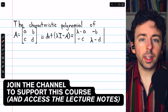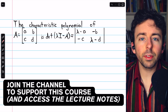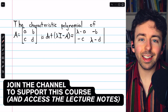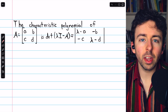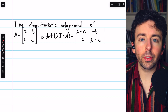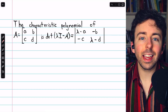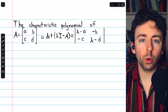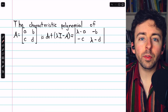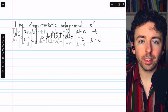Now that we've spent some time dealing with complex eigenvalues and complex eigenvectors, we can give a complete description of the eigenvalues and the characteristic equation of a 2x2 real matrix.